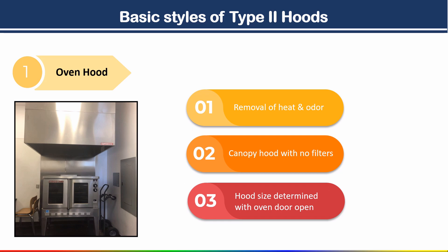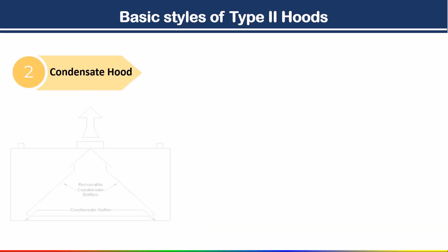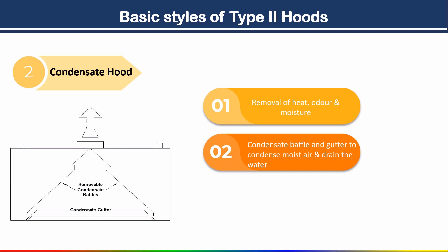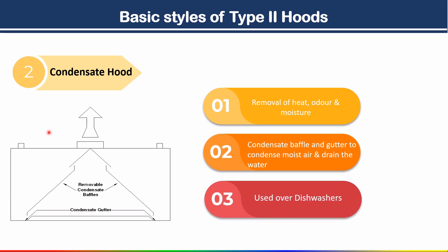Hood size for the oven hood is determined by the oven door size. When you open the door of your oven, you have to give 6 to 12 inches of overhang beyond the door for the hood. The second type 2 hood is the condensate hood. This type is used for removal of heat, odor and moisture. It generally uses a condensate baffle and gutter — the condensate gutter condenses moist air and drains the water. This type is generally used over dishwashers, steam tables, etc.